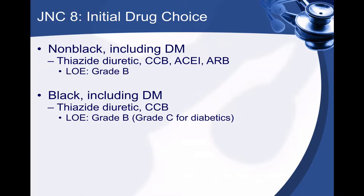In the JNC 8, the initial drug of choice for non-African Americans, including diabetes patients, is thiazide diuretics. I mentioned in the last lecture that thiazides may increase glucose slightly; however, the benefits of thiazide diuretics far outweigh the risks. Other initial options could be calcium channel blockers, ACE inhibitors, or angiotensin 2 blockers. For African Americans, including diabetes patients — because they don't seem to respond to ACEs and ARBs as significantly — we recommend using a thiazide diuretic or a calcium channel blocker.